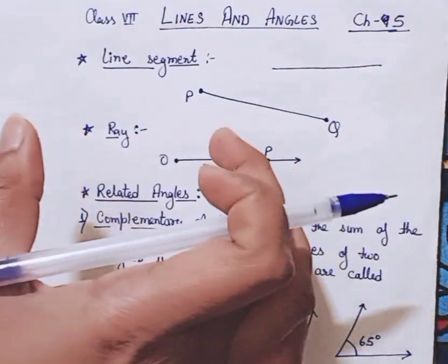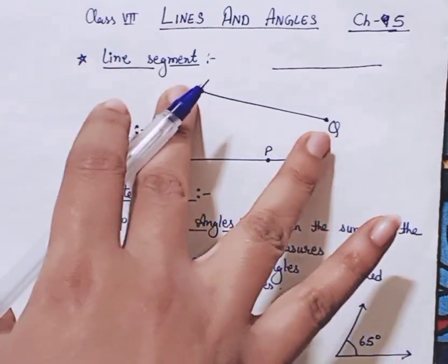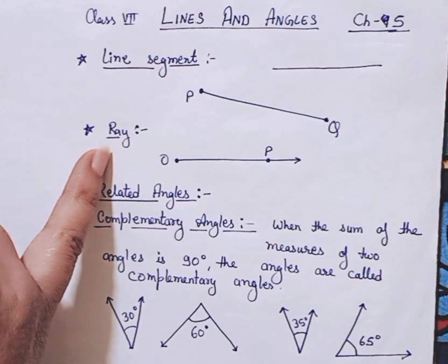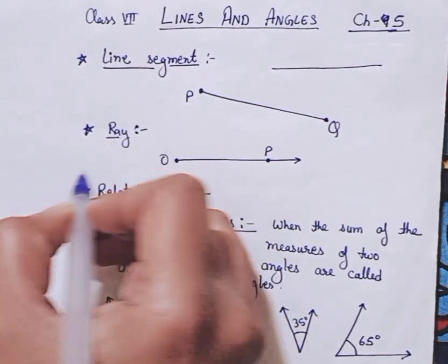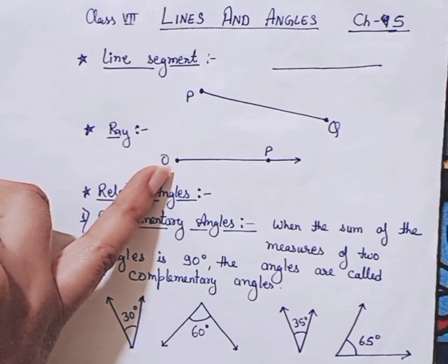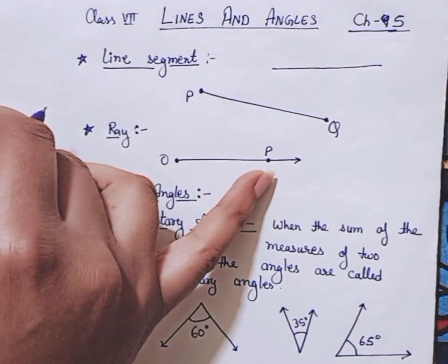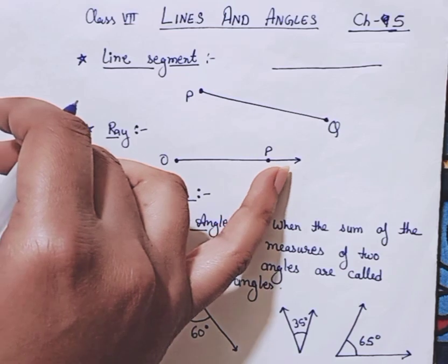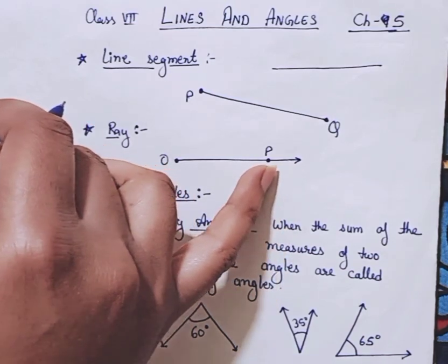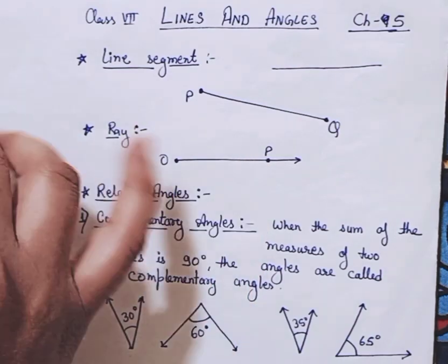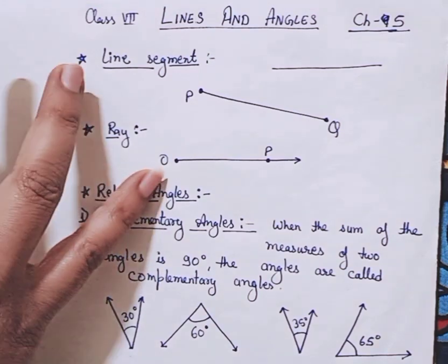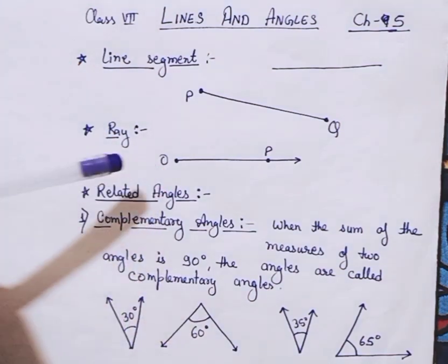Secondly, about rays. What are rays over here? Rays have simply one starting point but its end point is not definite. It is represented by an arrow, and further on that particular arrow we just take a point over here to make a name of the given ray. In this figure, OP is the ray.